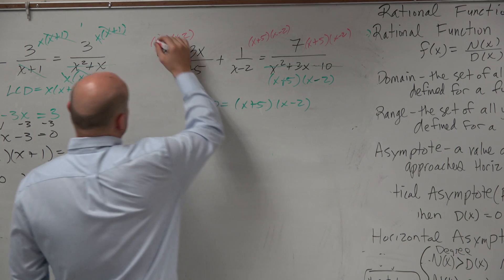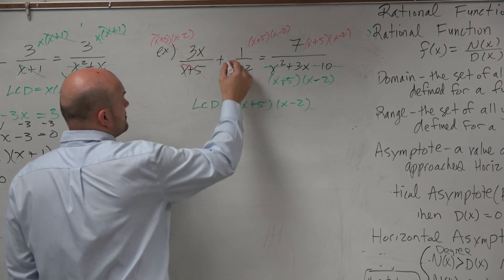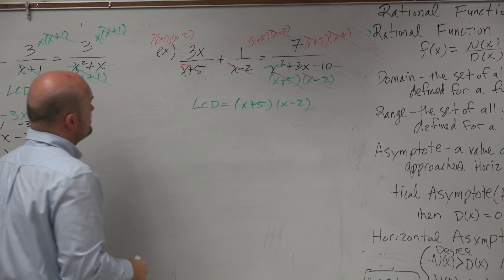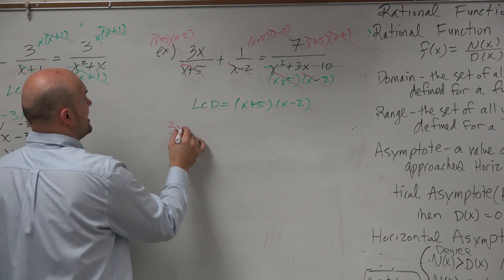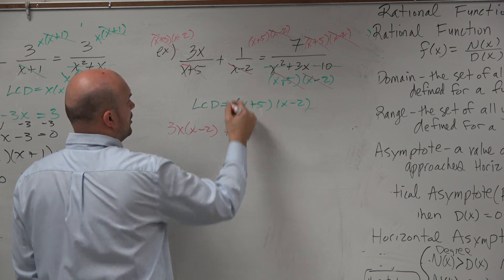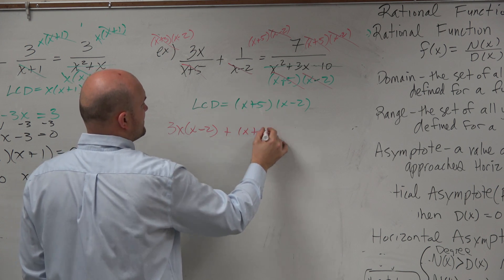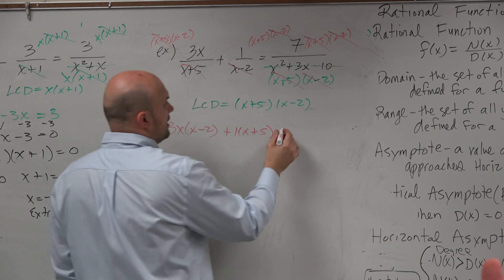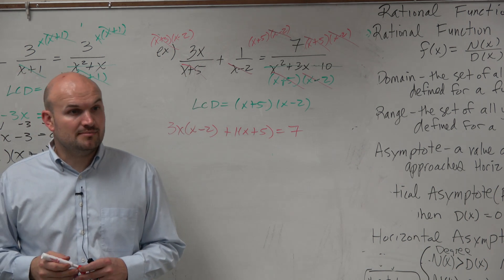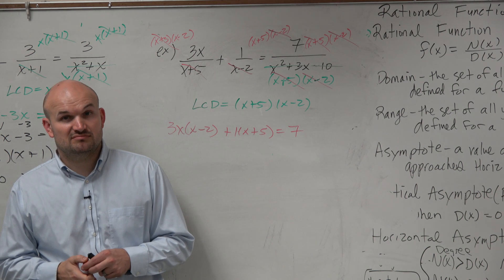So let's make sure we did that correctly. Those divide out, those divide out. Oh wow, all those divide out. So what are we left with? 3x times x minus 2 plus 1 times x plus 5. I'll put the 1 there. And that equals 7. Do we have any more fractions, Skip? No. Pretty cool, right?